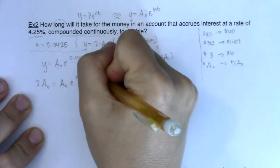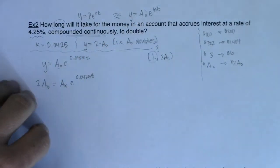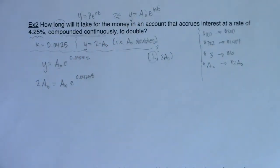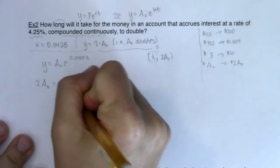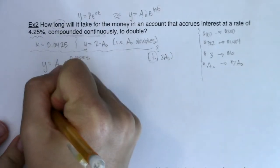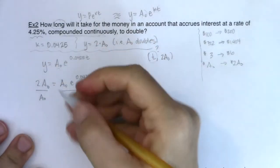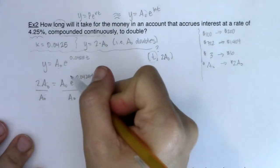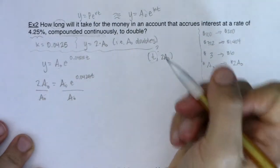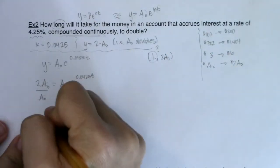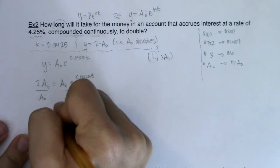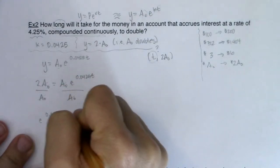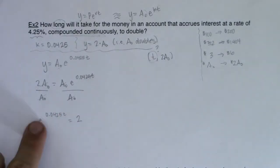All right, now like always, whenever you want to solve for a variable that's up in the exponent, isolate that exponential term. So what I want to do initially is divide both sides by A sub zero. So let me divide this one by A sub zero and this one by A sub zero. And I think you can start to see now the A sub zeroes are going to cancel out and that's great. So I'm going to write my variable time on the left side. I'm going to have E to the 0.0425T equaling two. When does my money double?